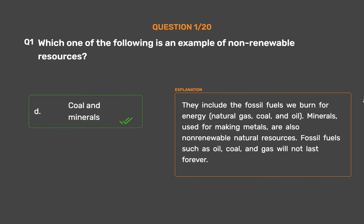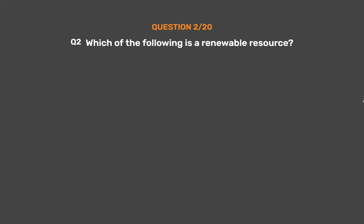Coal and minerals include the fossil fuels we burn for energy — natural gas, coal, and oil. Minerals used for making metals are also non-renewable natural resources. Fossil fuels such as oil, coal, and gas will not last forever.